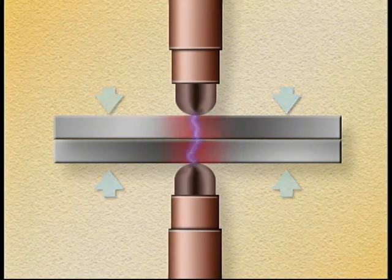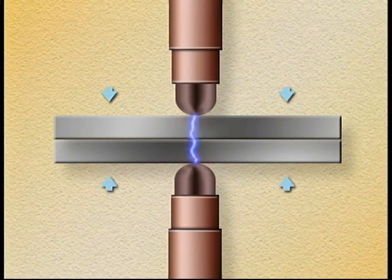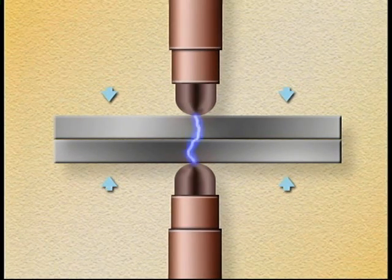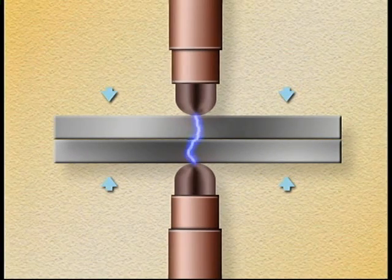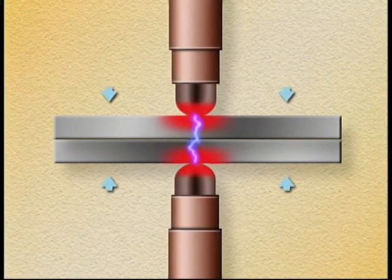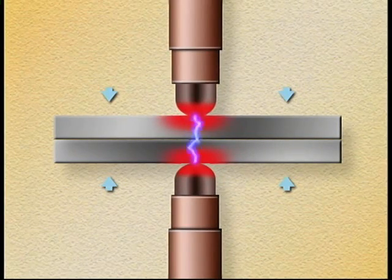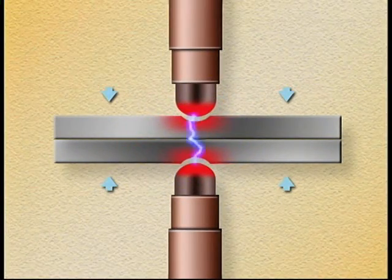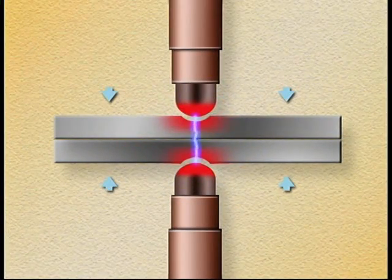In an extreme case of low force, resistance might actually be greater between the electrode and the part than between the parts being welded. This must be avoided because it can result in more heat being generated at the electrode tip than at the material faying surface. This could cause a surface expulsion in which molten metal can be thrown off in any direction.